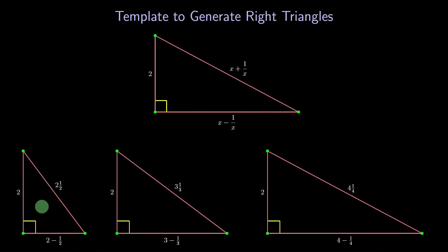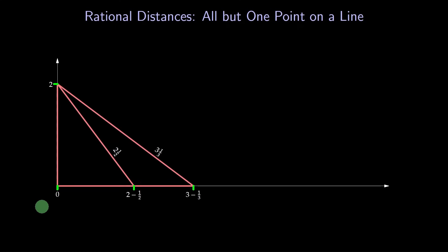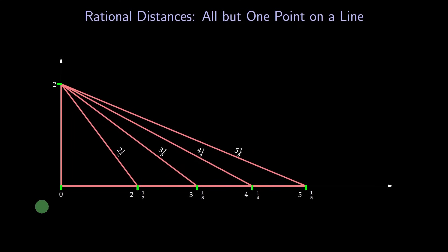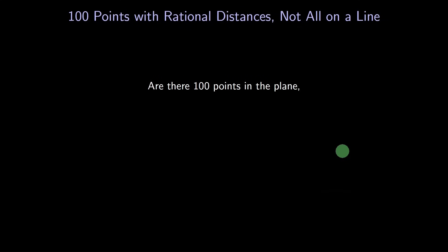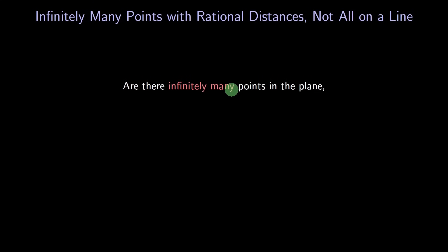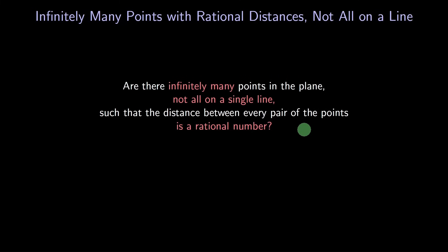It's nice that the left leg is always 2, so we can stack the triangles together. We get a diagram like this. I put the triangles on a coordinate plane. Note that every distance is rational. We could continue this way for 100 points or more. So now we know the answer to our question. Are there 100 points, not all on the same line, so that every distance is rational? Yes. We've actually solved a more general problem. Are there infinitely many points, not all on the same line, so that every distance is rational? The same example shows that the answer is yes.